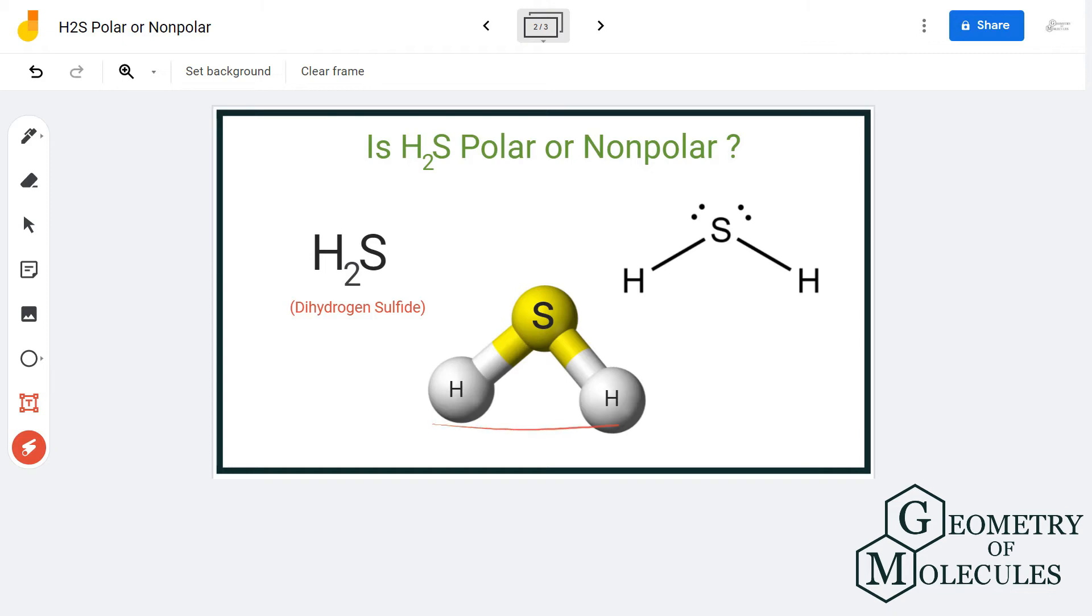The shape of the molecule is bent, and hence there are slight chances that this molecule could be polar. Let's look at its structure formula. The central atom here is the sulfur atom and both hydrogens are pushed downwards because of the two lone pairs on the sulfur atom. This creates a slightly negative charge on the sulfur atom and slightly positive charges on the hydrogen atoms.